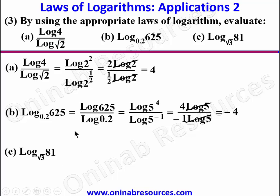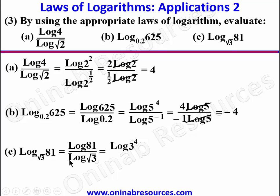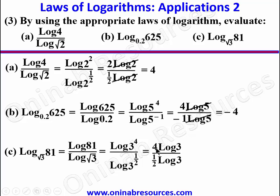For Problem 3c, we again change the base, giving log(81) over log(√3). Expressing 81 as 3⁴ and √3 as 3^(1/2), we have log(3⁴) over log(3^(1/2)). Bringing the powers down as coefficients gives 4 log 3 over 1/2 log 3. The log 3 terms cancel, leaving 4 divided by 1/2, which equals 4 times 2, giving 8. That completes Problem 3.